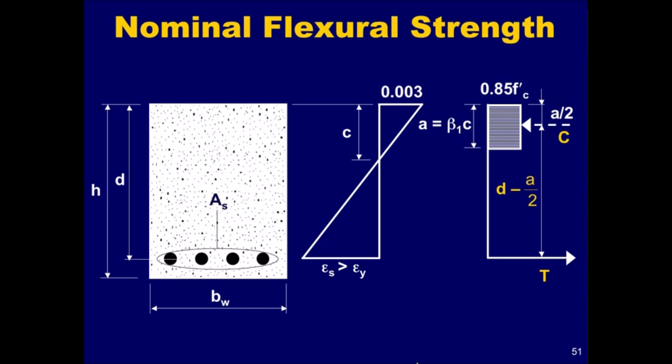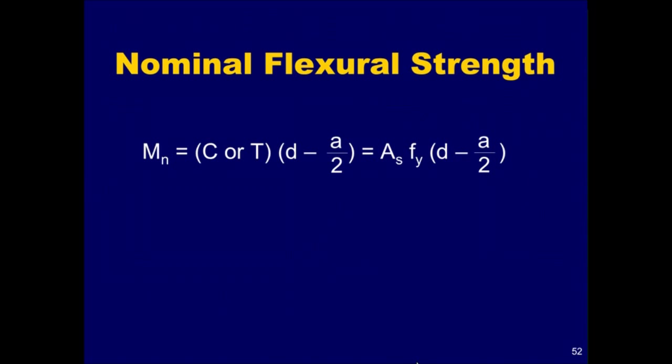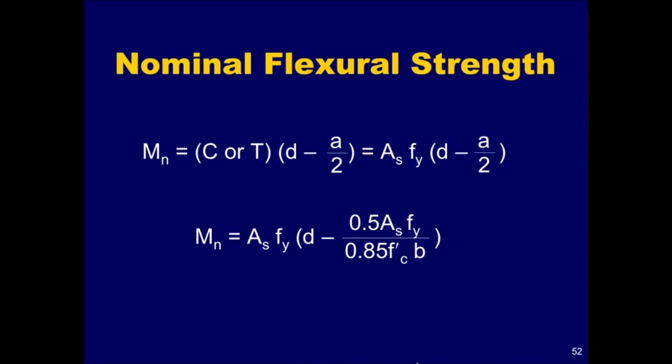The nominal flexural strength of the section can be obtained from moment equilibrium. Moments can be summed about any point on the section and set equal to zero. However, it's usually convenient to sum the moments about either C or T. Thus, from moment equilibrium, the nominal flexural strength M sub n of a reinforced concrete section with only tension reinforcement can be determined from the equation shown here. Substituting the expression for the distance a from force equilibrium, the nominal flexural strength can also be expressed as shown here.